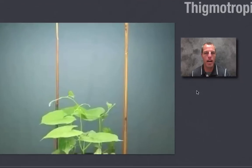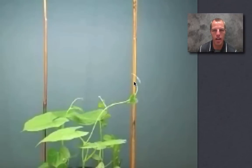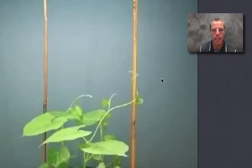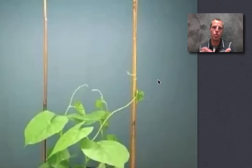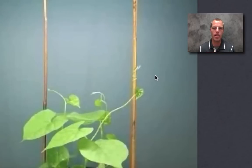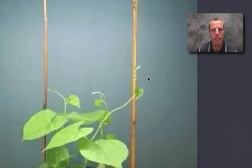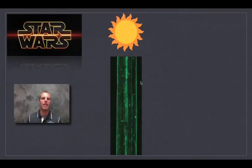In this example, watch this little tendril — it makes contact and then continues to wrap and move towards what it is touching. That is a positive thigmotropism. So those are our three main types of tropisms.